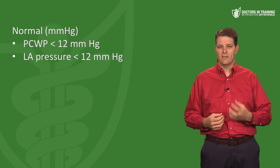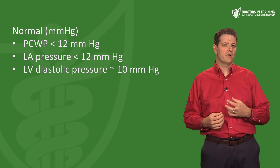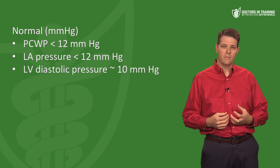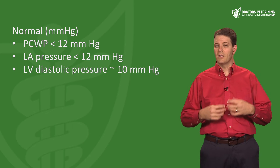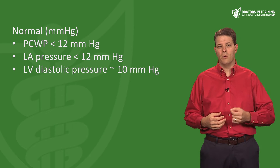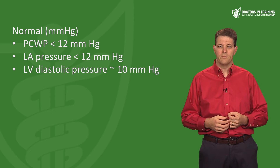A normal wedge pressure is less than 12 mmHg, the left atrial pressure is less than 12, and the left ventricular diastolic pressure is around 10. So if you want to know what's going on in the left side of the heart, a Swan-Ganz catheter can measure the pulmonary capillary wedge pressure and help determine what's going on.